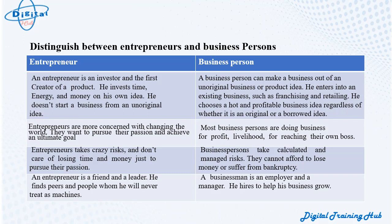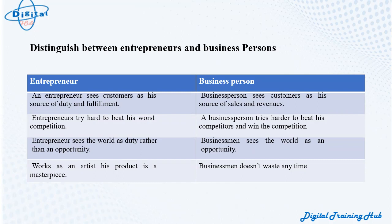An entrepreneur is a friend and a leader — he finds peers and people whom he will never treat as machines. A businessman is an employer and a manager who hires people to help his business grow. An entrepreneur sees customers as his source of duty and fulfillment, while a business person sees customers as his source of sales and revenues. Entrepreneurs try hard to beat their worst competition, while a business person tries harder to beat competitors and win the competition.